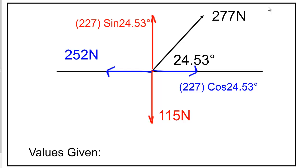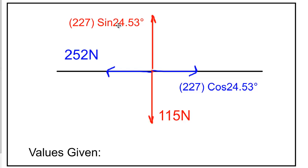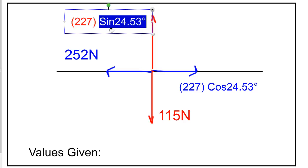Now it's getting a bit messy so I'm gonna get rid of things I no longer need. The 277 has been broken up into vertical and horizontal components now, so I don't need it anymore. That vertical component looks ugly, I need to make this into a nice happy days number. What I do is I take that sine 24.53 and I multiply it by my 227. Be careful when you do this on your calculator. Sine 24.53 equals, get your answer, then multiply that by 227 equals.